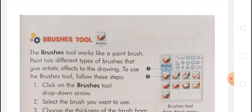Fourth, in the colors group select the color 1 button, then select any color in the color palette. Fifth, move the pointer onto the drawing area and drag the mouse to draw. The brushes tool works like a paint brush, and paint has different types of brushes that give artistic effect to the drawing.